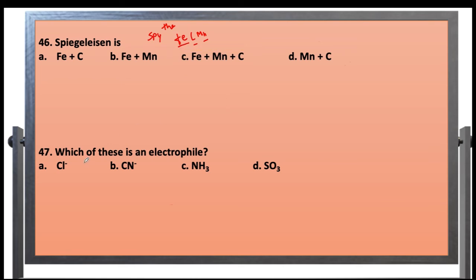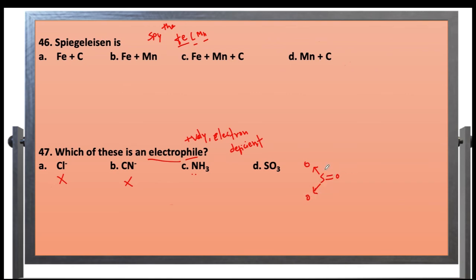Question 47: Which of these is an electrophile? An electrophile is electron-loving — it is electron deficient and positively charged or carries a partial positive charge. SO3 is an electrophile because it has an electron-deficient sulfur center. Therefore, option D, SO3, is the correct answer.